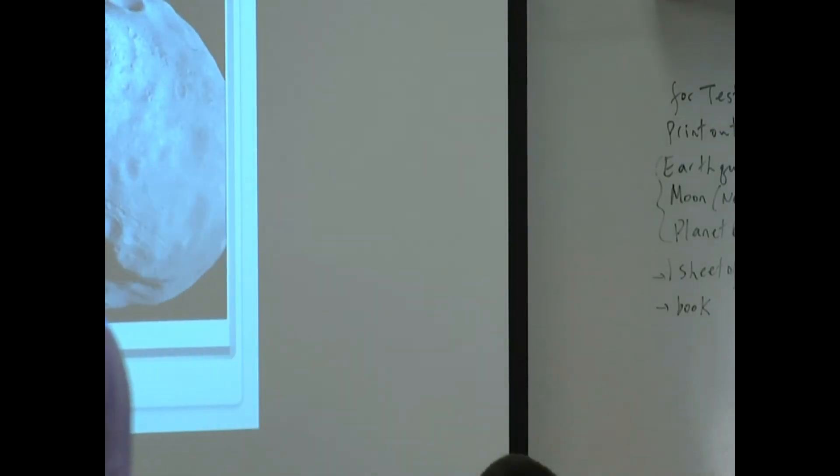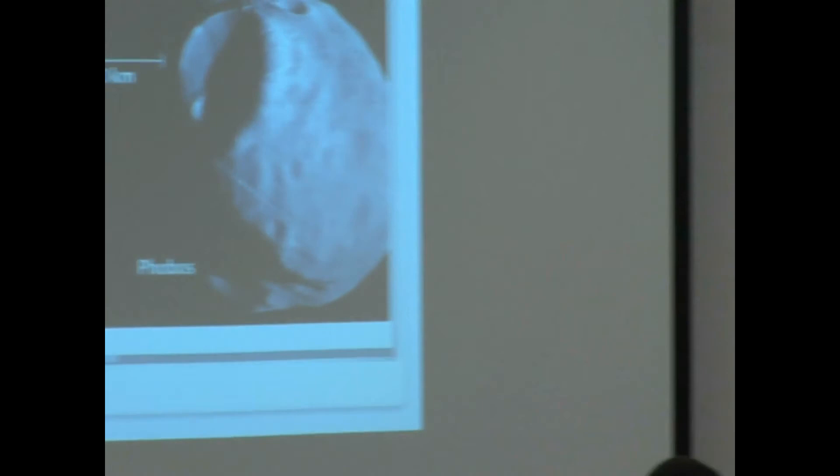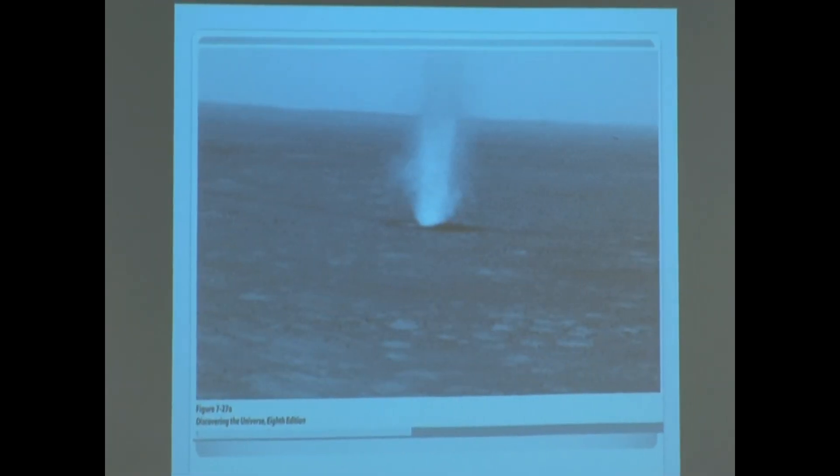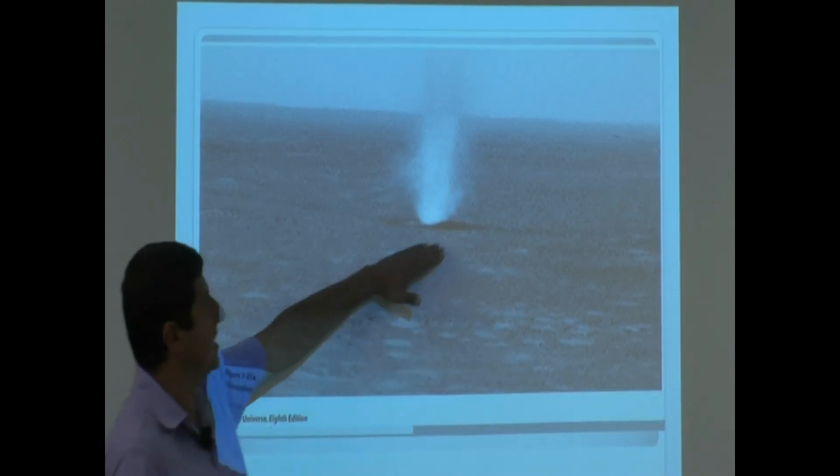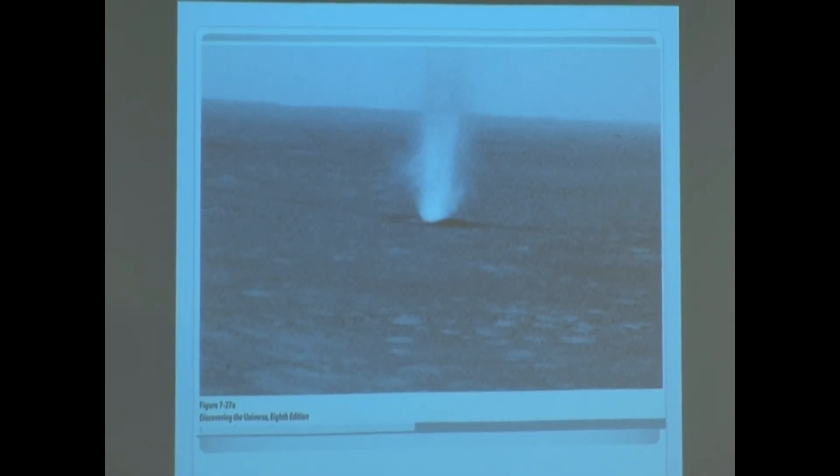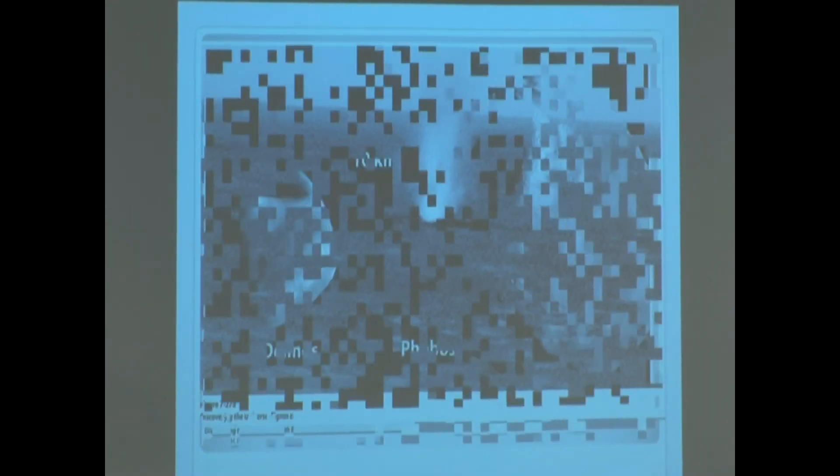This is kind of a, I like this picture. The dust storms on Mars. It's a dust storm developing. So we have some similar things like that on Earth.